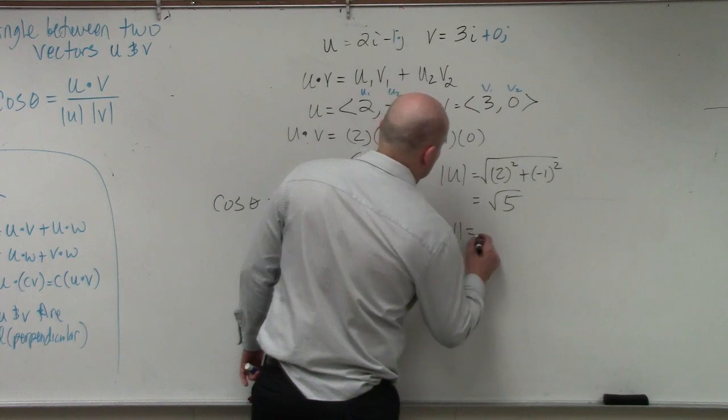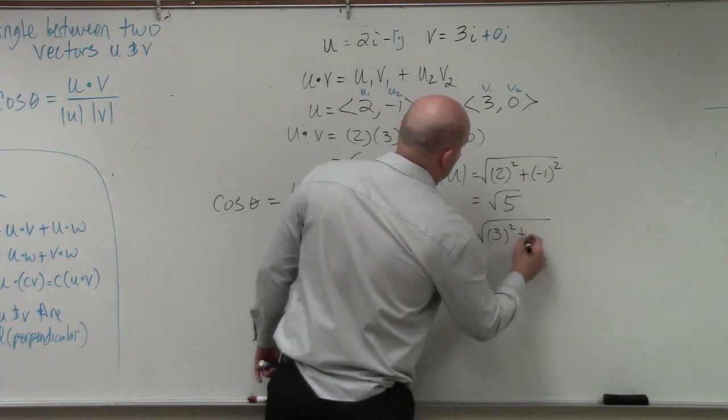Magnitude of v is the square root of 3 squared plus 0 squared.